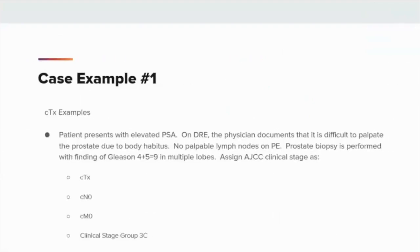Case example 1: Patient presents with elevated PSA. On digital rectal exam, the physician documents that it is difficult to palpate the prostate due to body habitus. No lymph nodes are found on physical exam, and a prostate biopsy is performed with a finding of Gleason's 4+5=9 in multiple lobes. AJCC clinical stage would be assigned as clinical TX, clinical N0, clinical M0, and clinical stage group 3C. Because we have a grade group of 5 and clinical TX, the clinical stage group can be assigned. Remember, TX and T blank would be considered as any T.